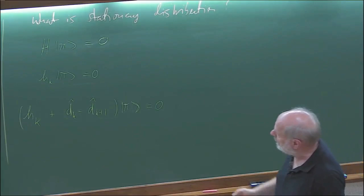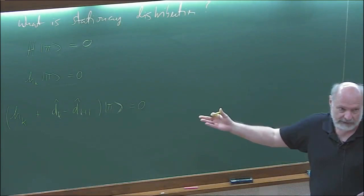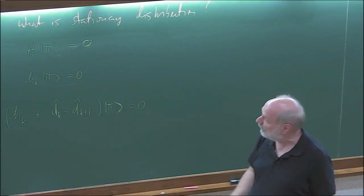You have to make two propositions: first have some idea what pi looks like, then try to verify whether you can construct matrices D such that this is true. That's the only way to obtain this invariant measure. There's no systematic way to construct it—one needs experience and good luck.